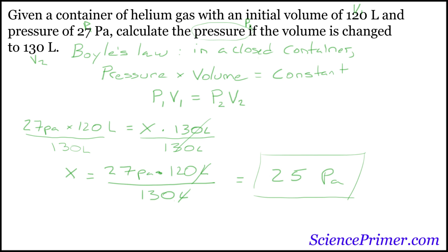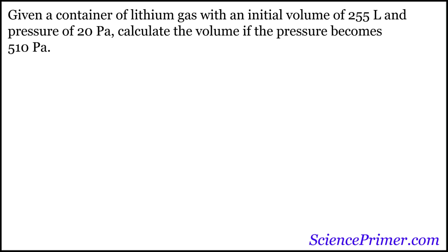Let's clear this and try another question. Now we're asked, given a container of lithium gas with an initial volume of 255 liters, so here's our v1, and a pressure of 20 pascals, so this is p1. Calculate the volume, so we need to find a new volume, v2, if the pressure becomes 510 pascals. So now this is our p2.